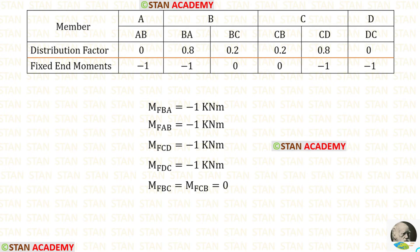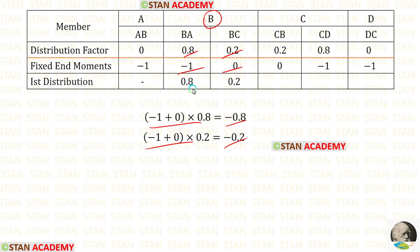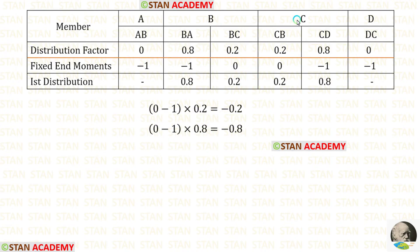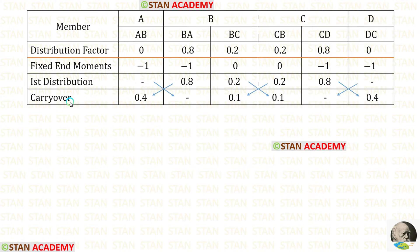Now let us start making the moment distribution table for sway analysis. In the table, first let us enter all of the members, then the distribution factors which we calculated initially, then the fixed end moments. Now let us do the first distribution in joint B — we have to add these two fixed end moments and then multiply with the distribution factors. We are getting negative values, so we enter them as positive. Now let us do the distribution in joint C — we add these two values and multiply with the distribution factors. We are getting negative values, so we enter them as positive. Now let us do the carry over by dividing these values by 2 and entering the answers.